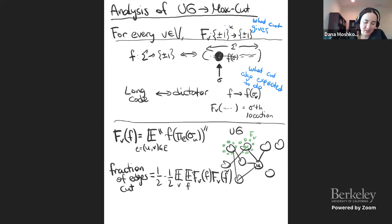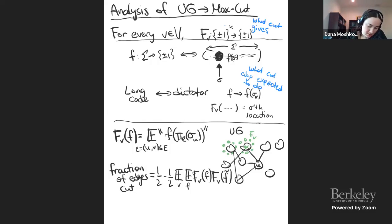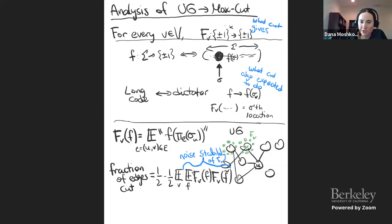This actually looks much more familiar — because what we check here is the noise stability of fv. This term is the noise stability of fv. This is what we achieved with the construction: the fraction of edges cut exactly relates to the noise stability of the function we get.